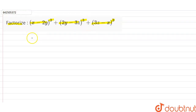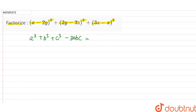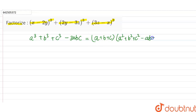So firstly, there is an identity: a³ plus b³ plus c³ minus 3abc is equal to (a plus b plus c) into (a² plus b² plus c² minus ab minus bc minus ca).